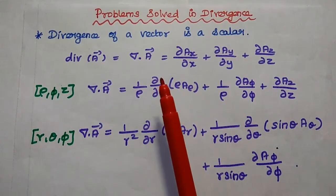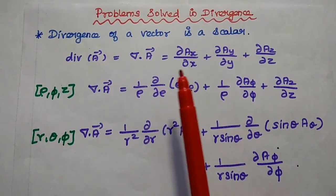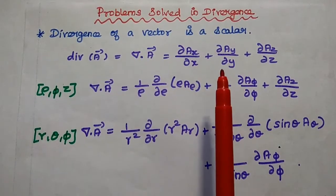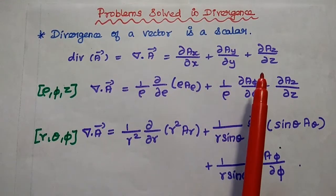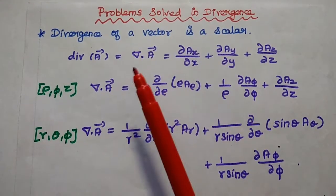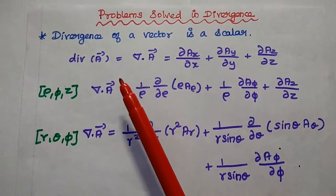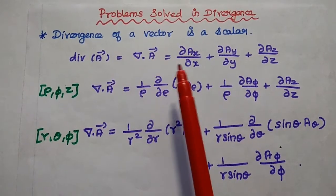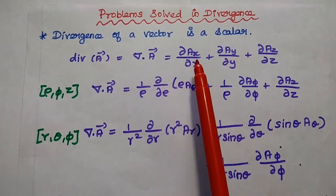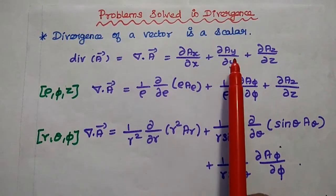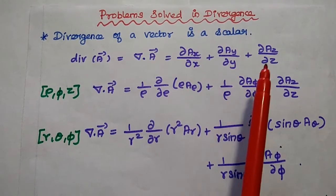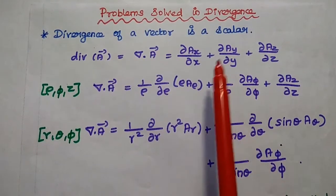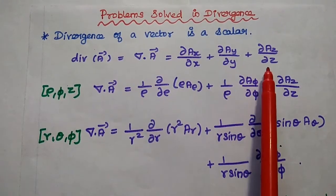The first one is rectangular coordinate or Cartesian coordinate system. The coordinates are x, y, and z. The divergence of a vector A is given as del dot A, which is equal to ∂Ax/∂x + ∂Ay/∂y + ∂Az/∂z. This is the formula for the Cartesian coordinate system.